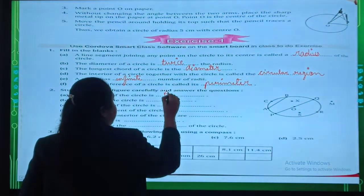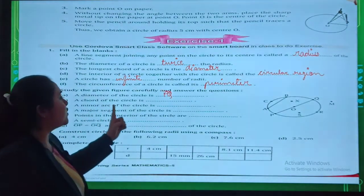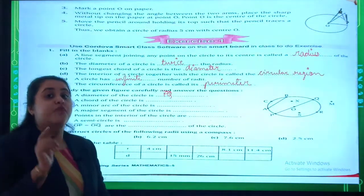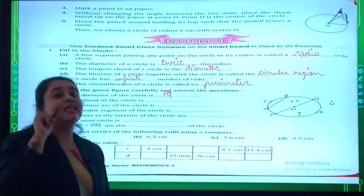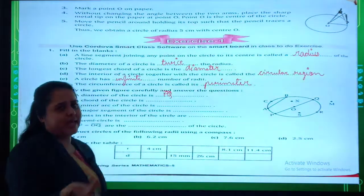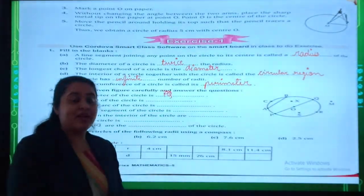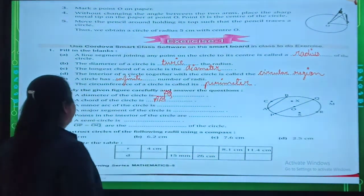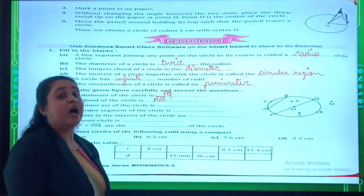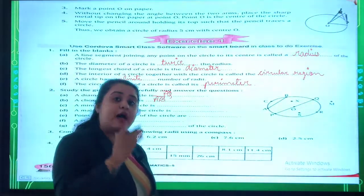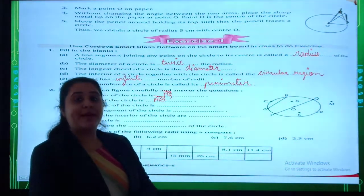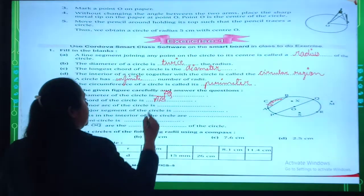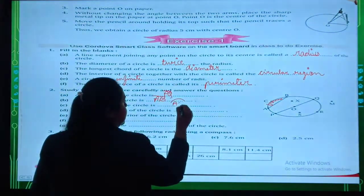Second, a chord of the circle is dash. Remember chord is a line segment that joins two points on the circle. The chord is the line segment AB. Third, a minor arc of the circle is minor arc. According to this which is your minor arc? This one is your minor arc ACB. You will use this type of symbol, ACB.